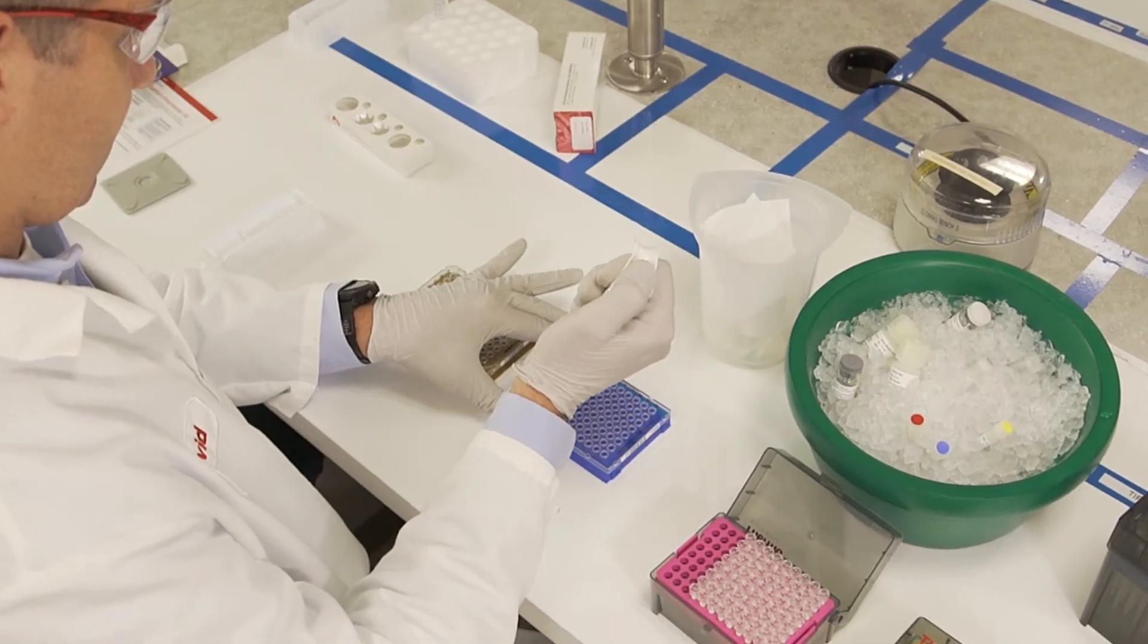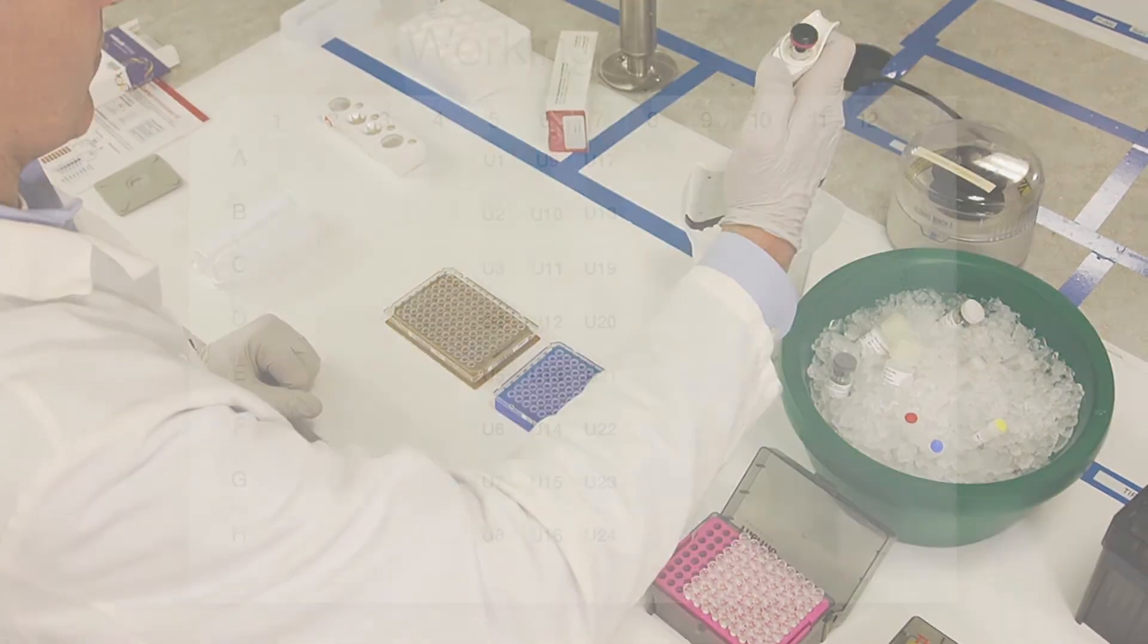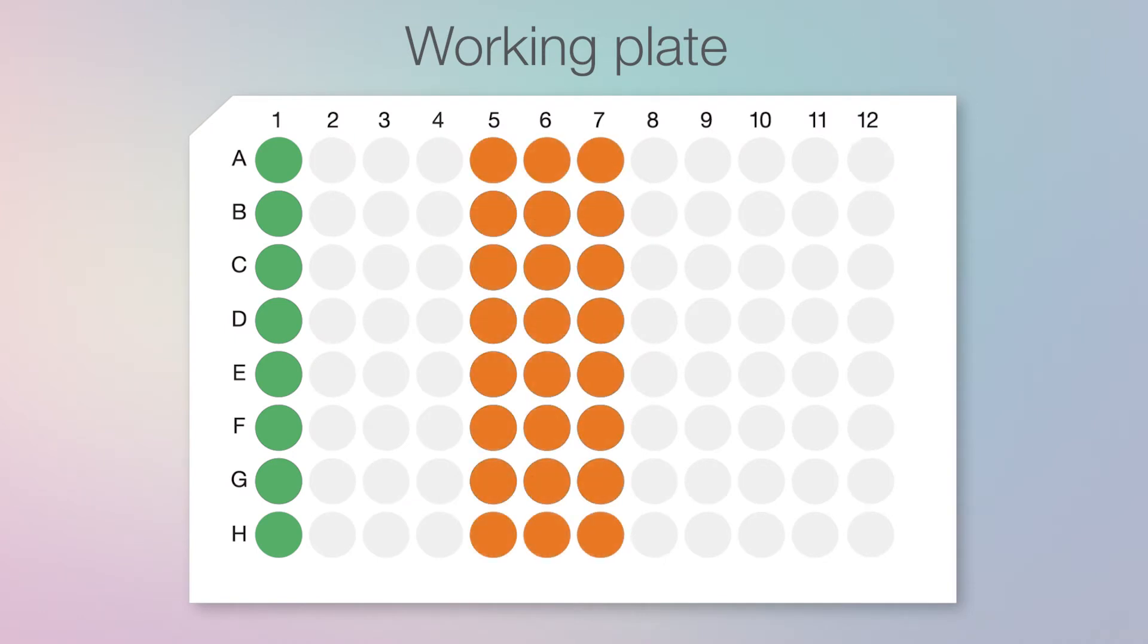We recommend setting up a working plate to enable multi-channel pipetting. Column one is used to make the antibody conjugate mixture. The middle columns are reserved for the unknown samples. The last column will be used to create your standard curve dilution series.